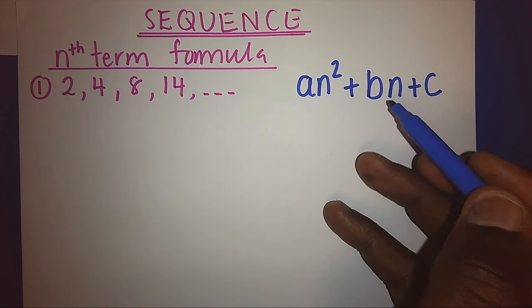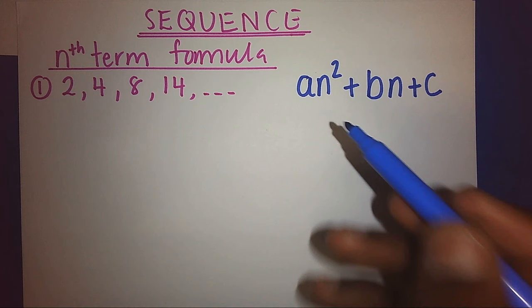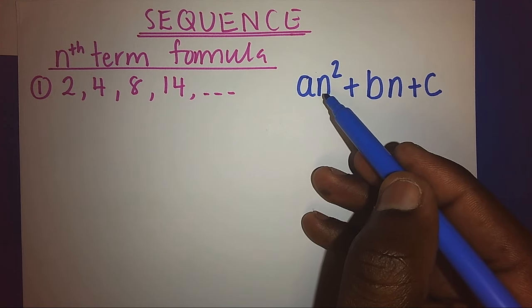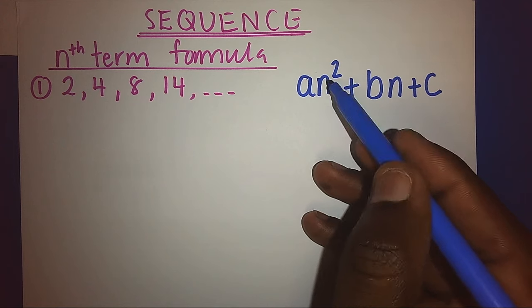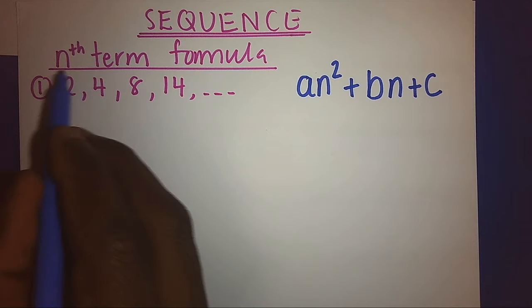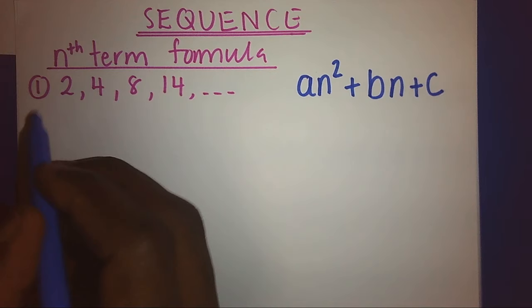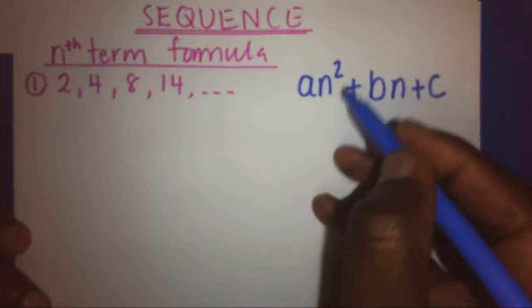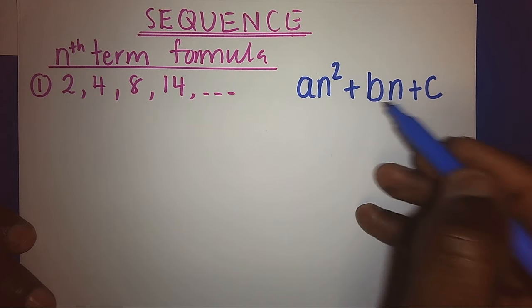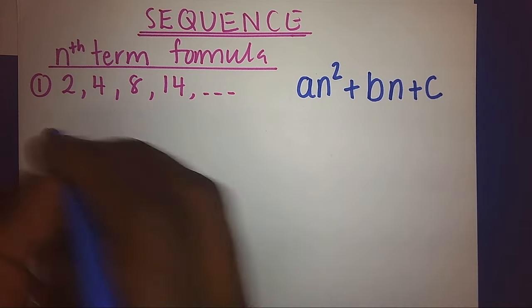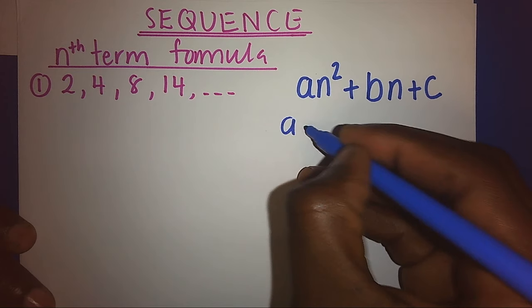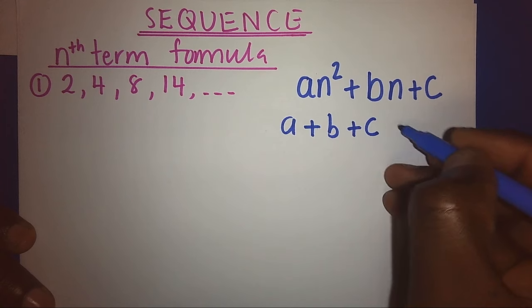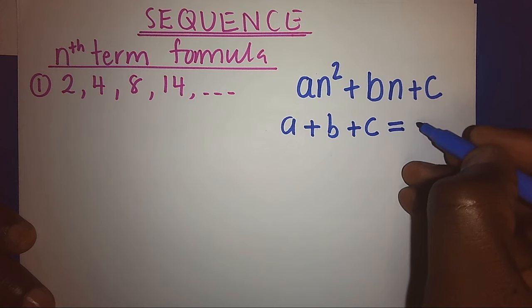Therefore, if I want the first term, I will make n=1. And remember, when I make n=1, it should give me my first term too. Hence, if I make n=1, I will be having a + b + c, and that should give me my first term, which is 2.